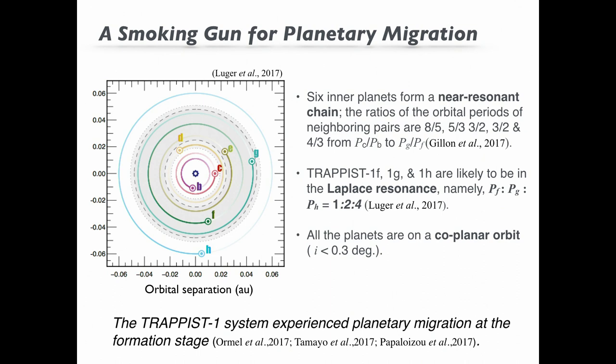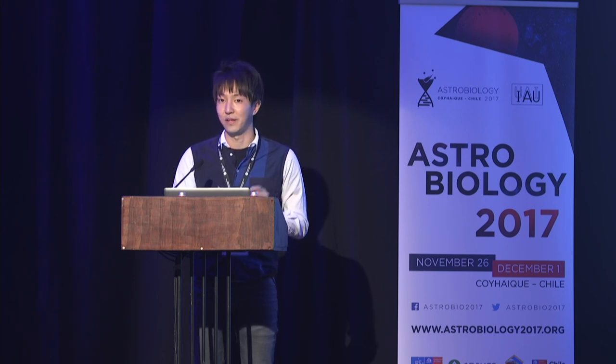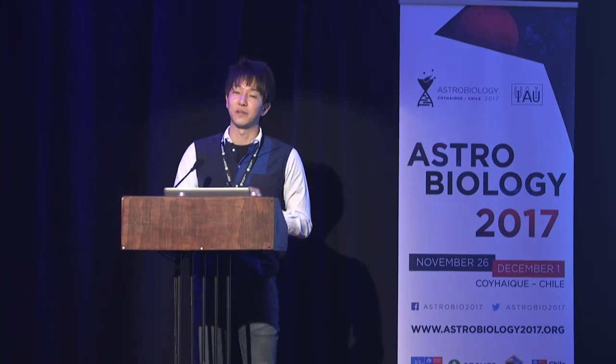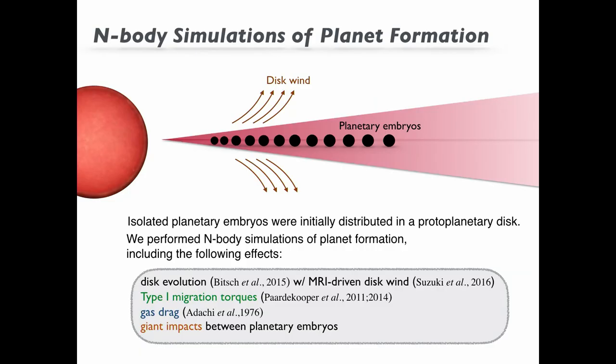How can we explain such a beautiful orbital configuration? It's easy: if a planet migrates, such mean motion resonances, like a resonant chain, can form easily. In order to verify this concept, we carried out an N-body simulation of planet formation around cool stars. Initially, isolated planetary embryos were distributed in the disk, and we incorporated up-to-date disk models into our simulation — for example, disk evolution with disk winds, Type I migration due to disk-planet interactions, and so on.